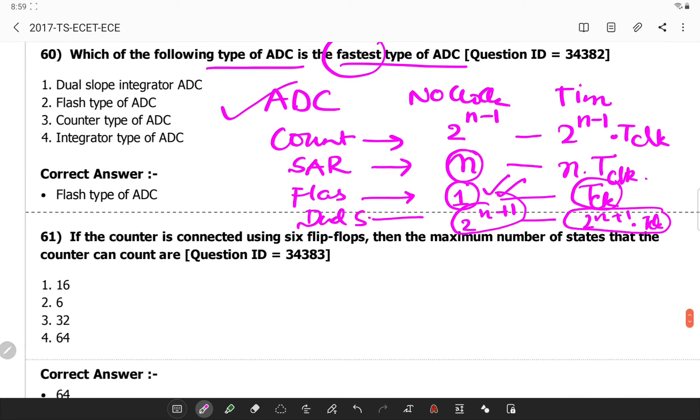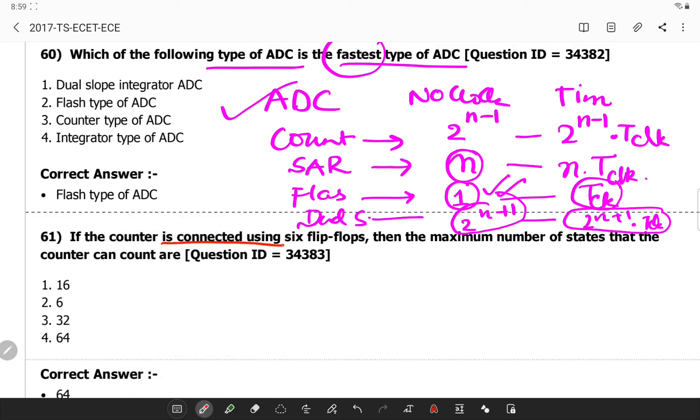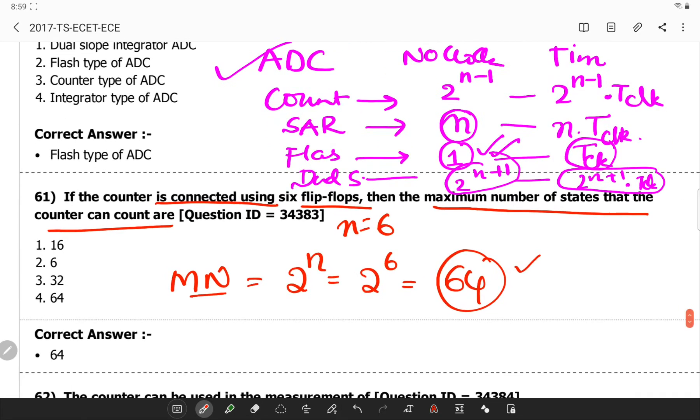Next, if the counter is connected using 6 flip flops, so N is given as 6, then the maximum number of states that the counter can count. The maximum number of states is given by the formula 2 power N. So 2 power 6 is equal to 64.